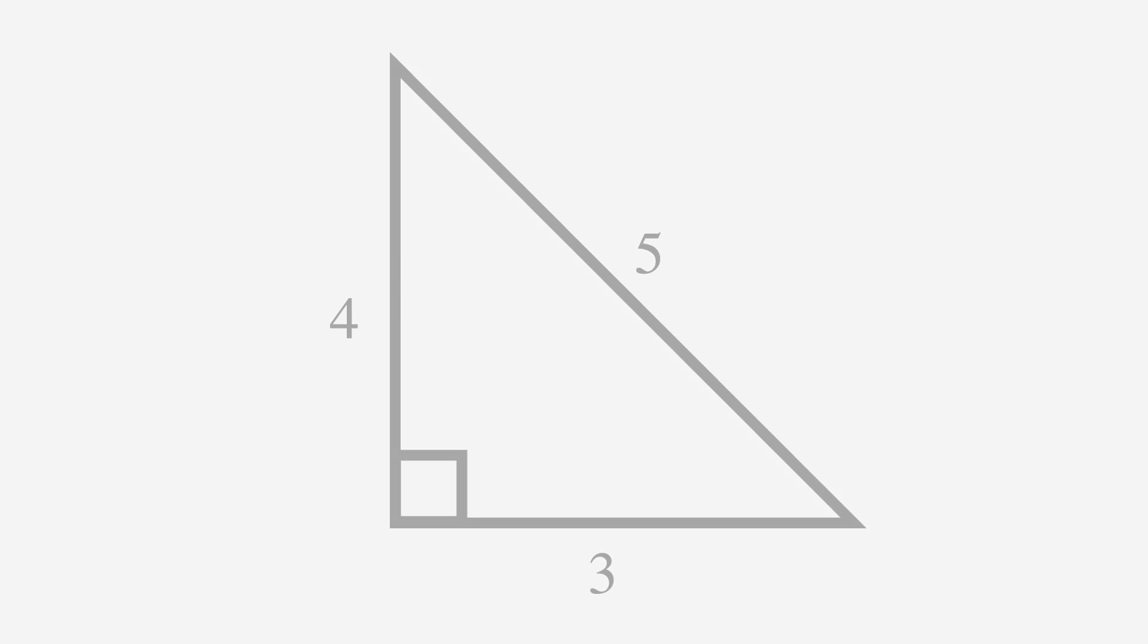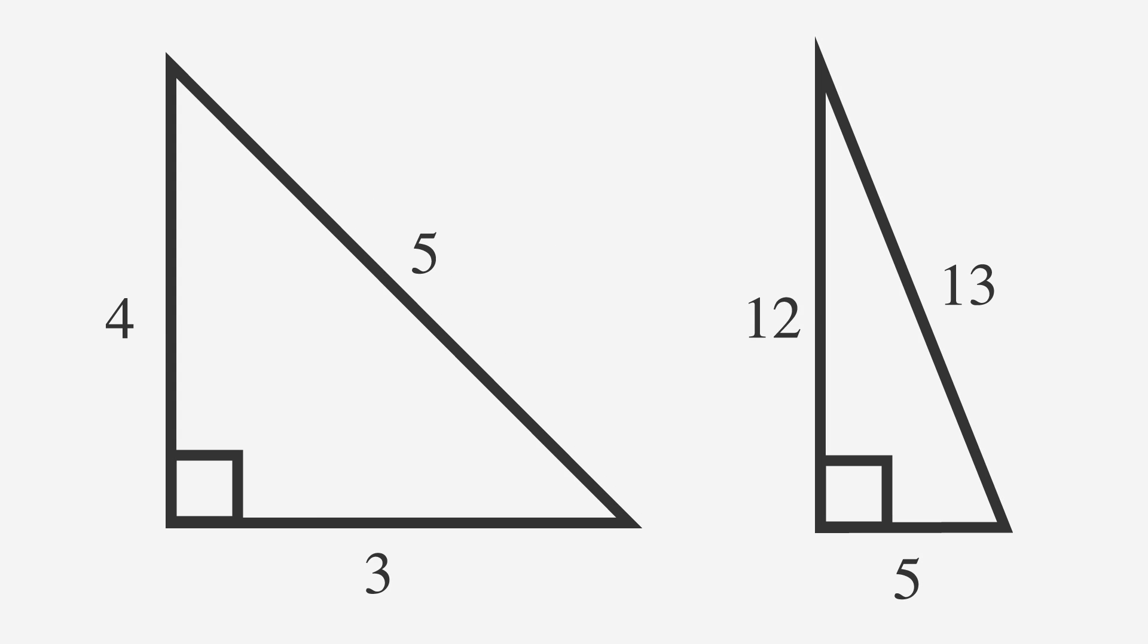The triangle we just solved was a right triangle whose sides weren't all integers. You might remember that integer means a whole number that can be expressed without any digits after the decimal. You'll see a lot of triangles like that on the ACT, but you'll also see two particular right triangles whose side lengths are integers: 3-4-5 right triangles and 5-12-13 right triangles.